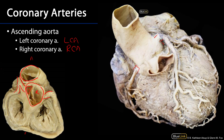Both the LCA and the RCA are going to travel along the coronary sulcus. On this particular heart — an unusual view — there is the inferior margin of the heart, the apex, and the anterior interventricular sulcus. The pulmonary trunk has been reflected down and away. Here is part of the coronary sulcus, and there is the other part of the coronary sulcus.